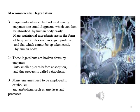Another function of enzymes in the cell is macromolecule degradation. Large molecules can be broken down by enzymes into small fragments which can then be absorbed by the human body easily. Many nutritional ingredients such as sugars, proteins, and fats cannot be taken easily by the human body. These ingredients are broken down by enzymes into smaller pieces before absorption, and this process is called catabolism. Many enzymes are employed in catabolism and anabolism, such as amylases and proteases.